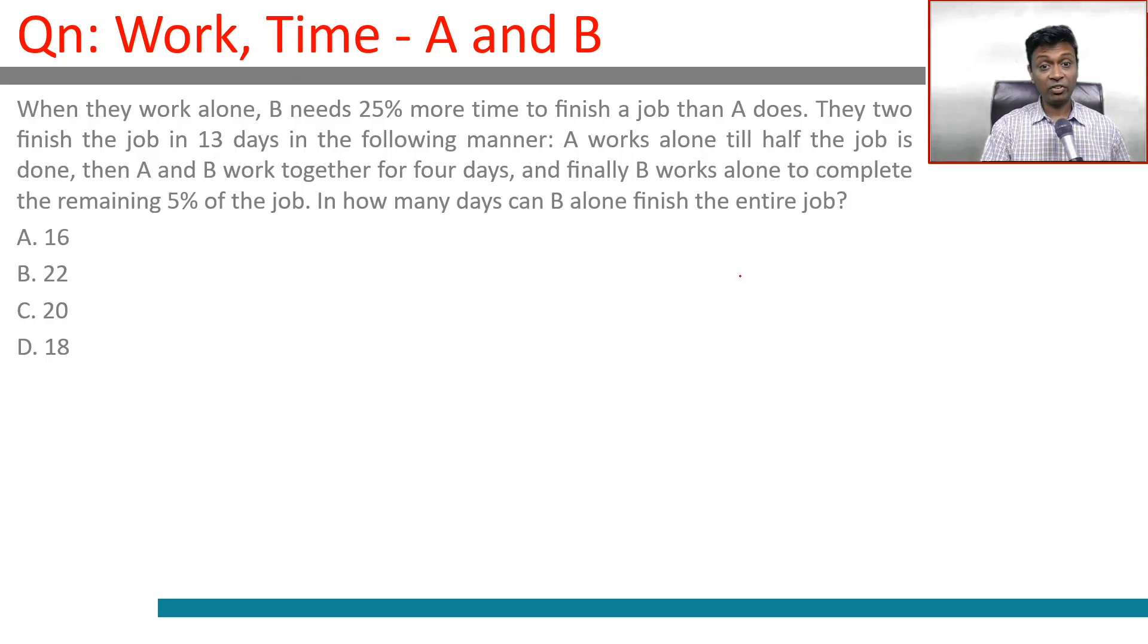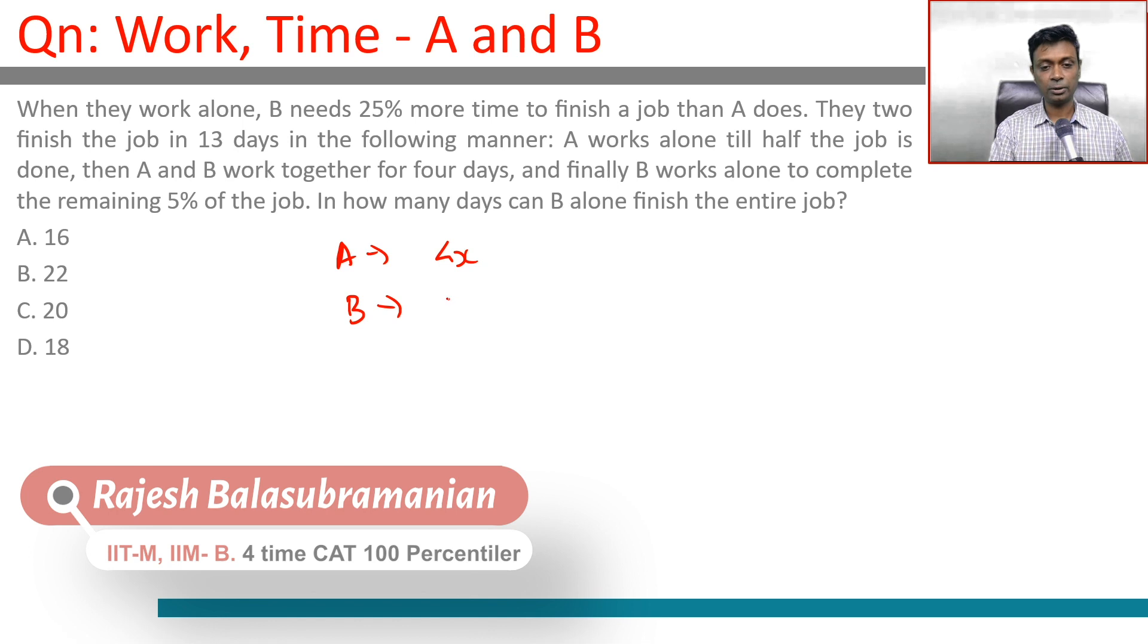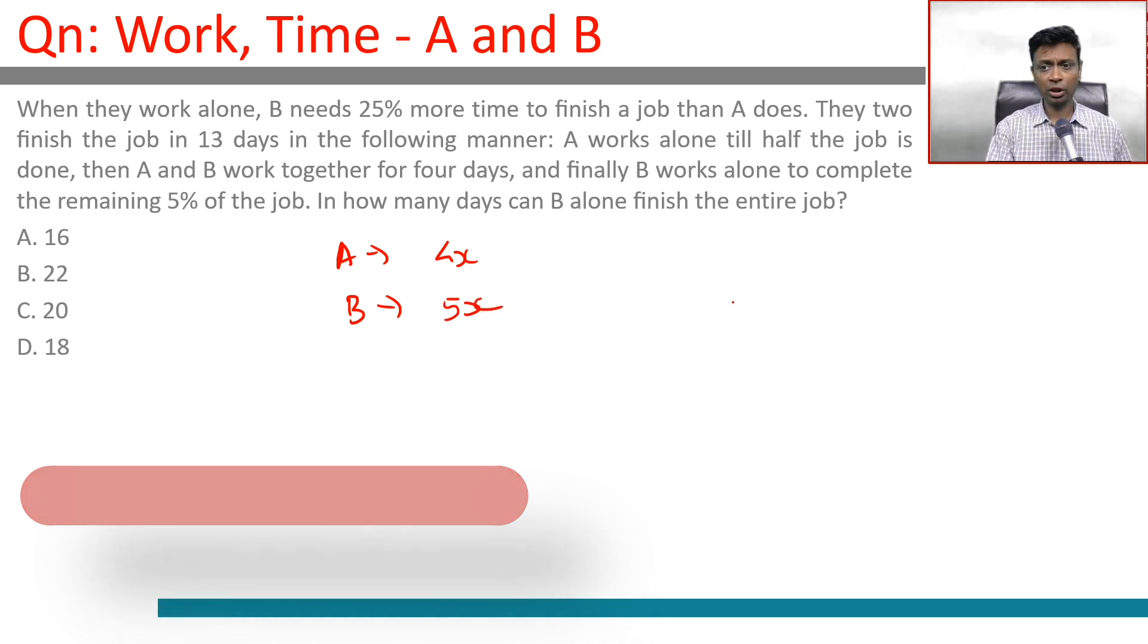When they work alone, B needs 25% more time to finish a job than A does. So if A takes 4x days, B will take 5x days to finish the job. They finish the job in 13 days in the following manner.